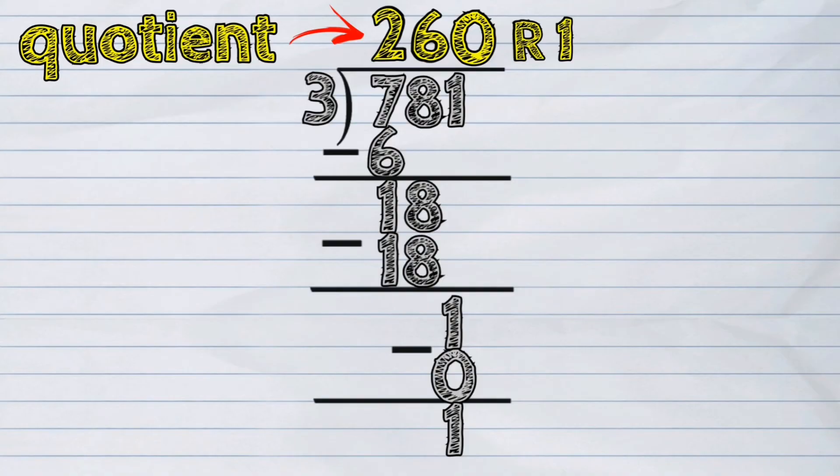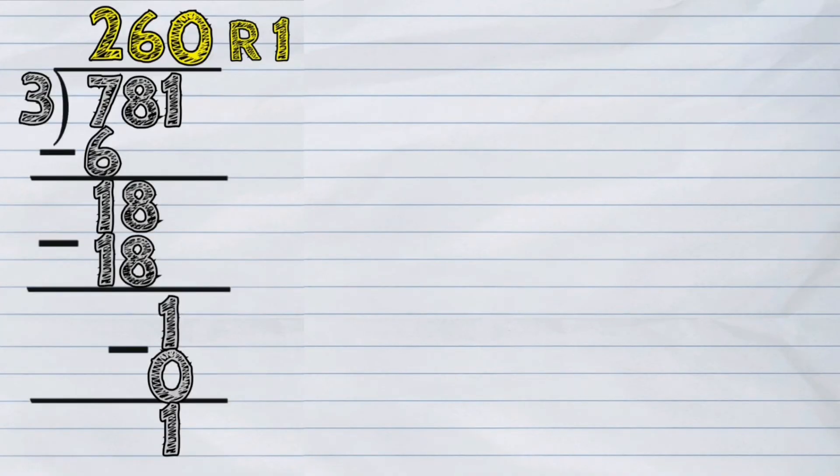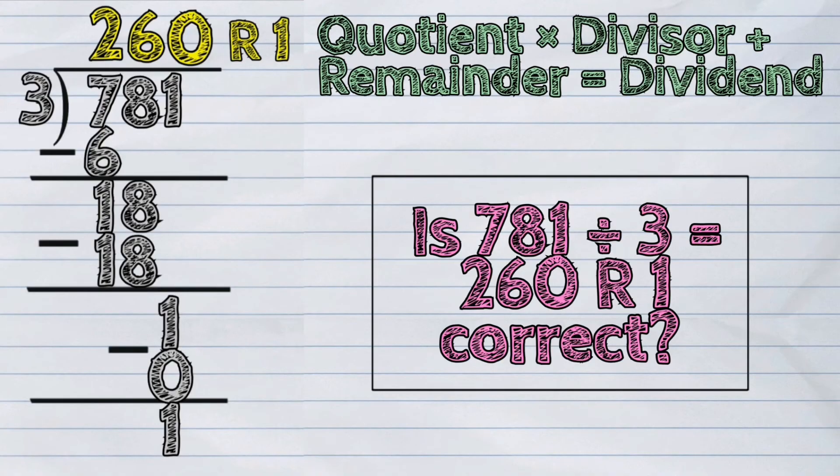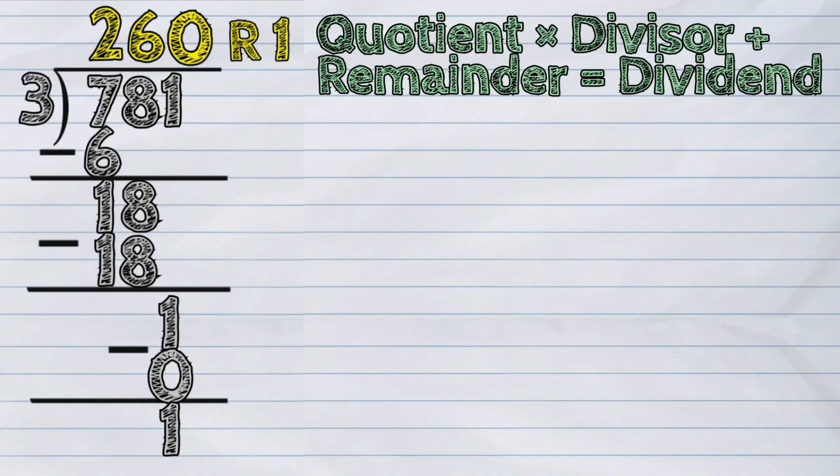We can check our answer by using this formula. The quotient times divisor plus remainder is equal to dividend. Is 781 divided by 3 equals 260 remainder 1 correct? Let's apply the formula.